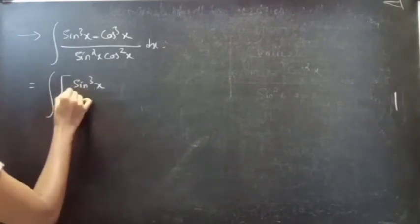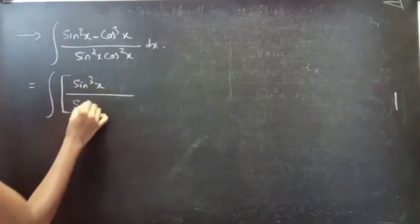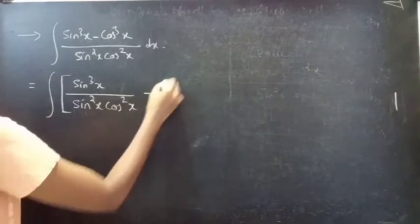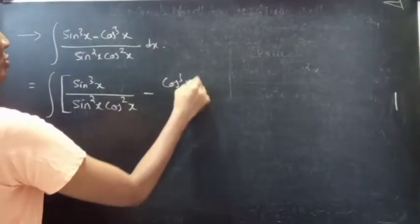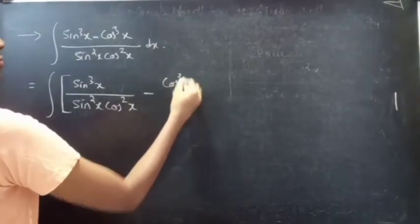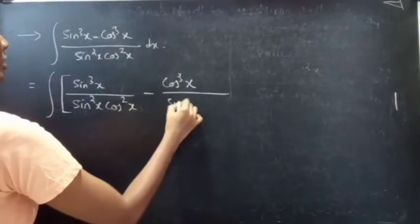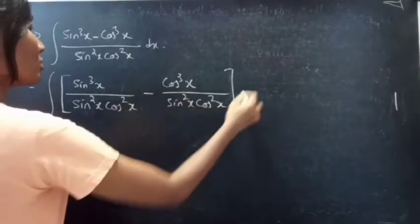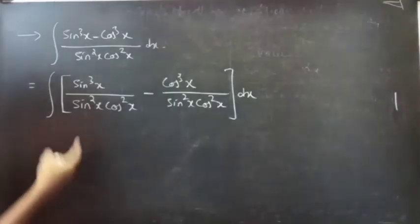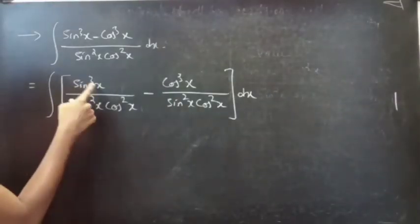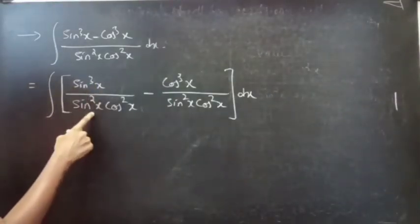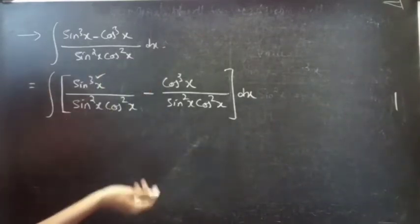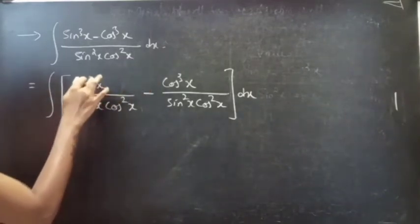First, we get sin³x divided by (sin²x · cos²x), minus cos³x divided by (sin²x · cos²x), dx. In the first term, the numerator has sin³x and the denominator has sin²x, so we can split sin³x as sin²x times sin x.